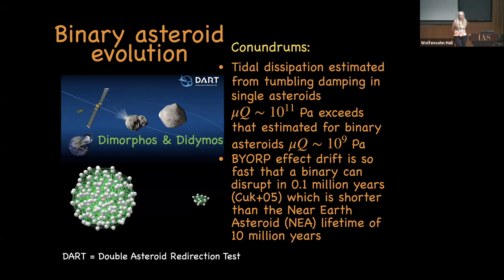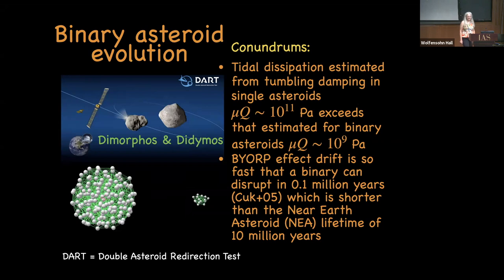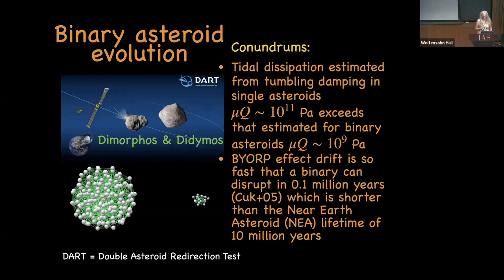The latest thing we worked on this summer is binary asteroid evolution. Up to this point we had only resolved a single body — now we're going to resolve two: a primary and a secondary. We're motivated in part by the DART mission, which is supposed to go to a binary asteroid next year. The goal of DART is to fire a kinetic impactor at Dimorphos, the secondary, and see what happens.